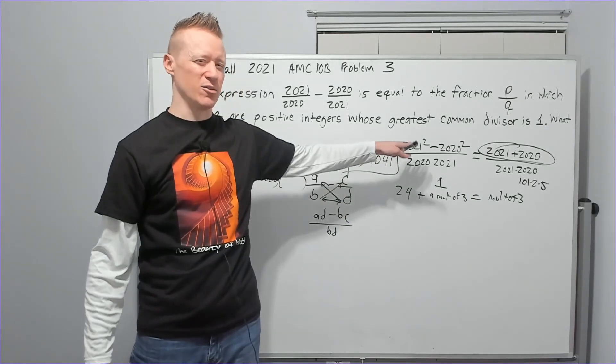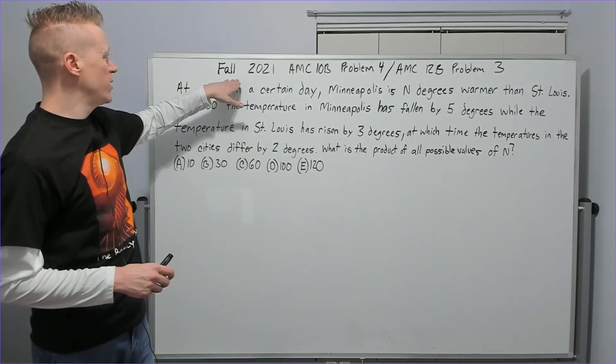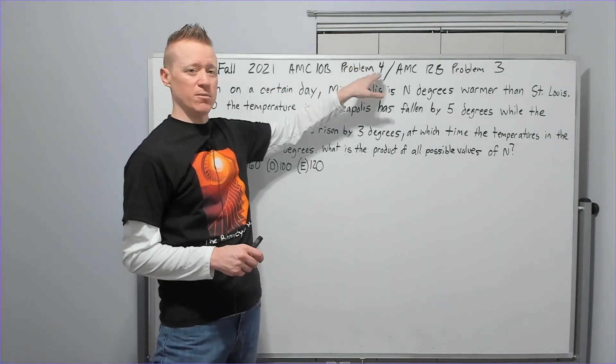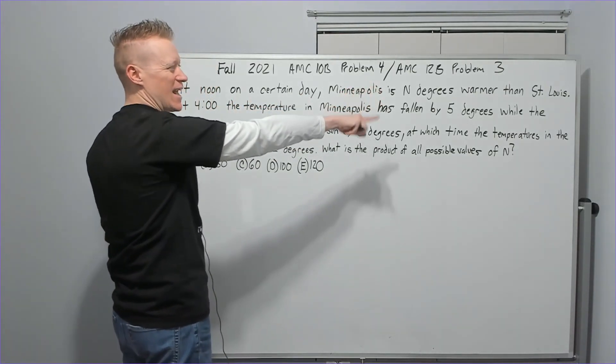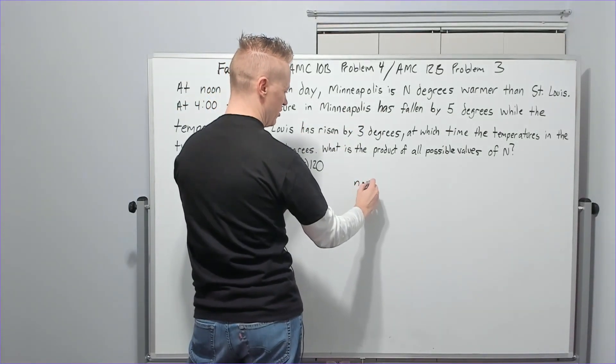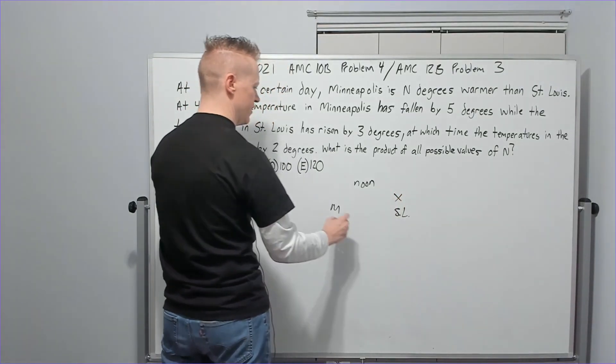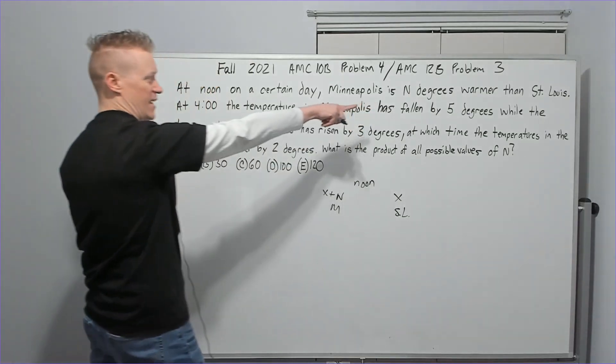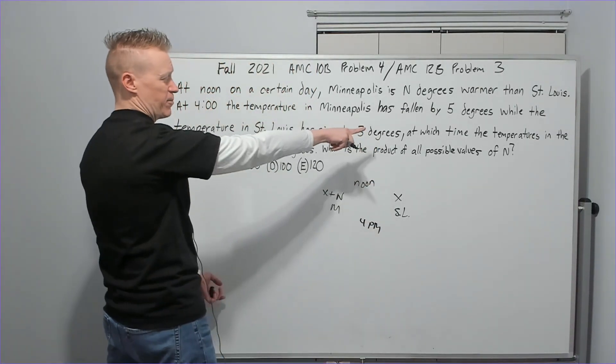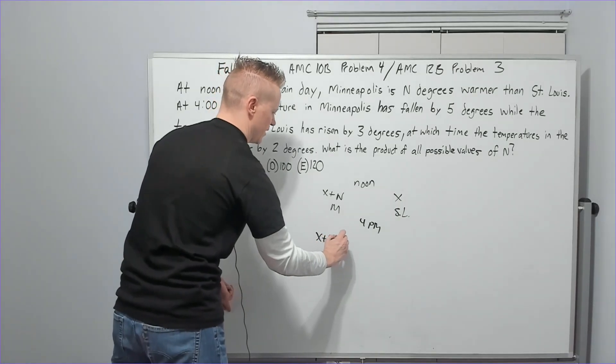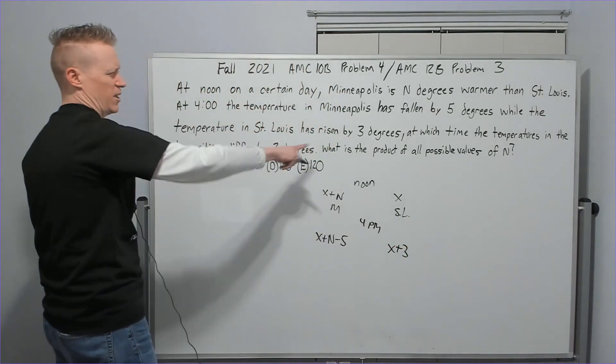Continuing with the Fall 2021 AMC 10B, this is problem four. At noon a certain day, Minneapolis is n degrees warmer than St. Louis. So I'm going to write Minnesota and Saint Louis and say that it's x here and x + n here because it's n degrees warmer than St. Louis. At 4 pm the temperature in Minneapolis has fallen by 5 degrees, so now it's x + n - 5, while the temperature in St. Louis has risen by 3, so you've got x + 3.